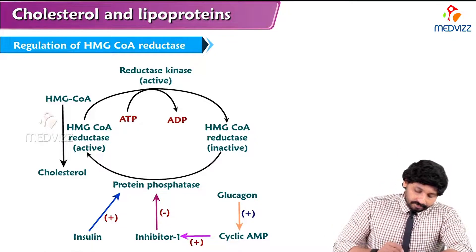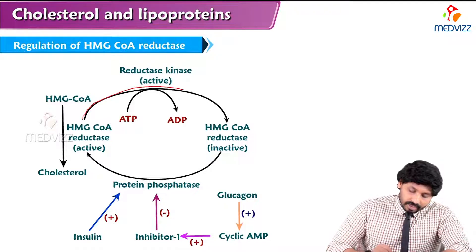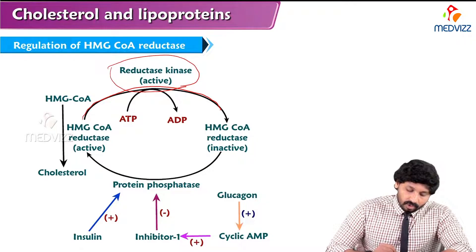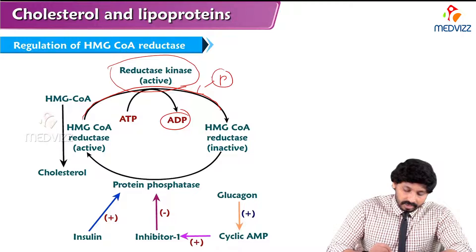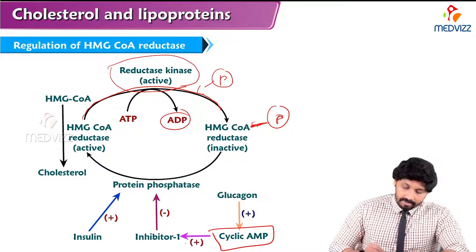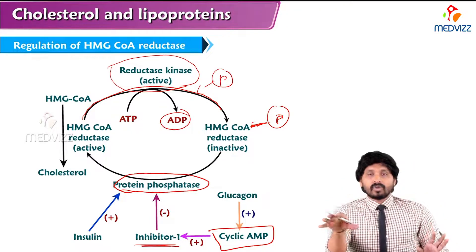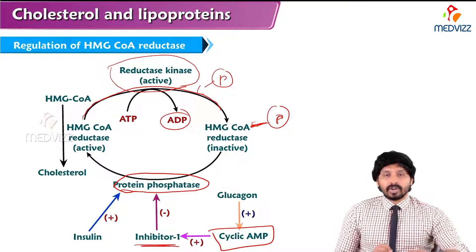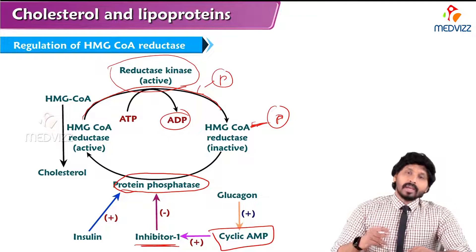Looking at covalent modification of HMG-CoA reductase in the diagram: the enzyme converts HMG-CoA to cholesterol in its active form. When reductase kinase phosphorylates HMG-CoA reductase, using ATP converted to ADP, a phosphate group is attached and the phosphorylated form is inactive. Glucagon increases cyclic AMP levels and stimulates inhibitor-1, decreasing the concentration of protein phosphatase. Insulin increases the activity of protein phosphatase, which dephosphorylates and converts inactive HMG-CoA reductase to its active form.